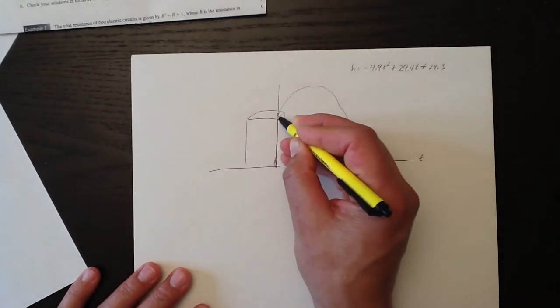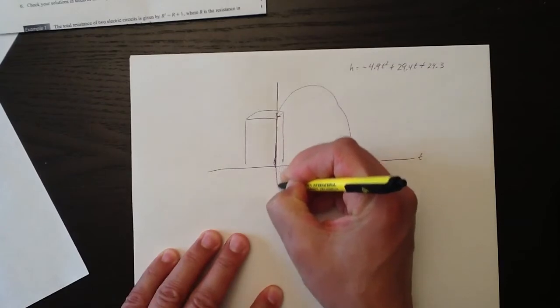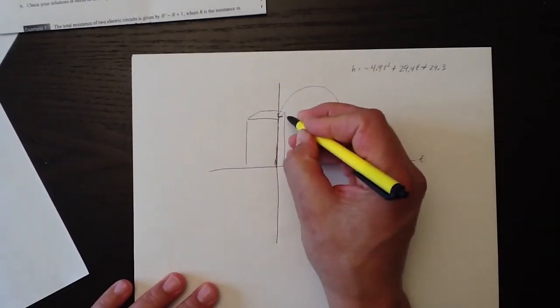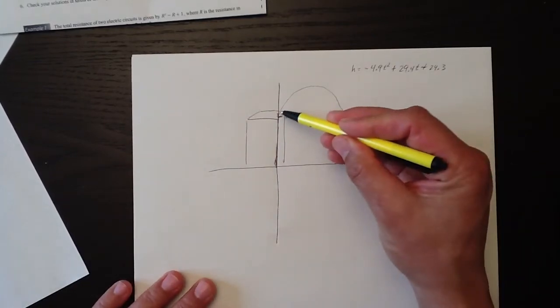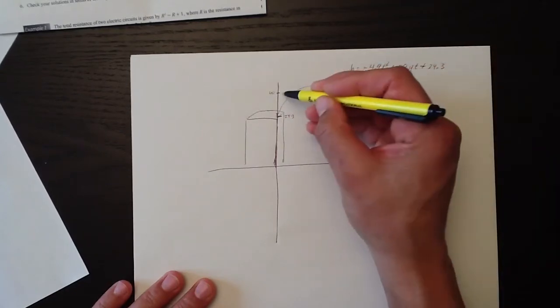Just so that we know, this will be our y-axis. I'm actually drawing the axis like this. And this point here on the y-axis is actually 24.3. At some point, the ball is going to go up.